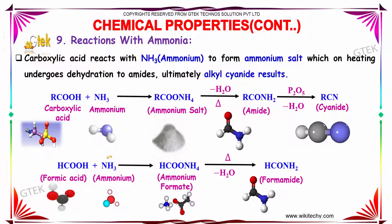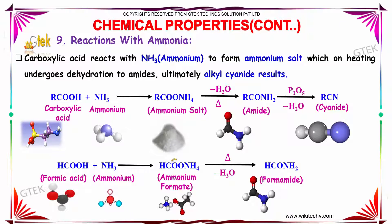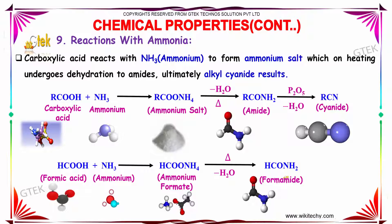When formic acid reacts with ammonia, it produces ammonium formate, which on decomposition and removal of a water molecule produces formamide.